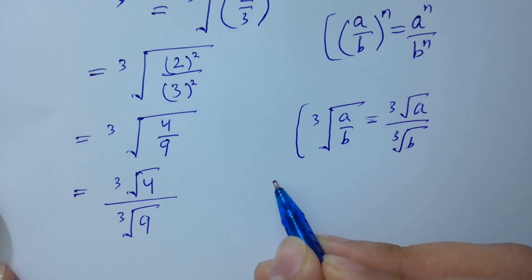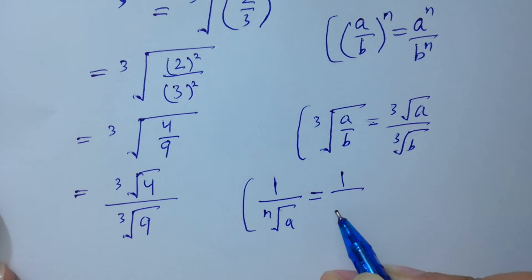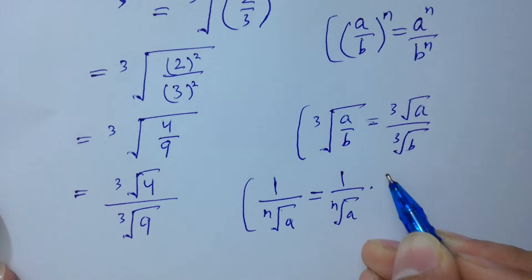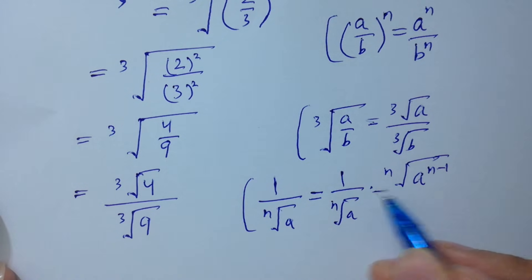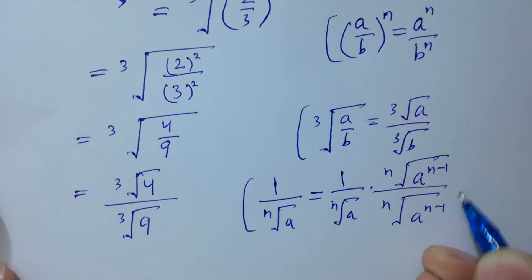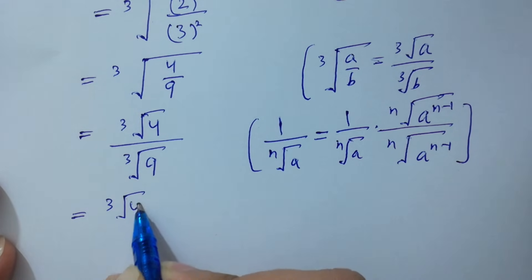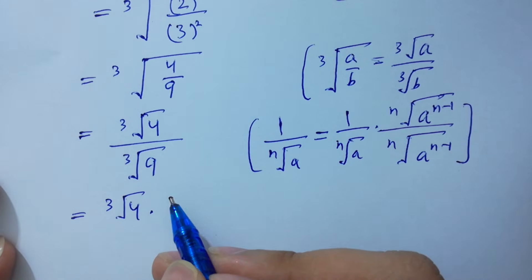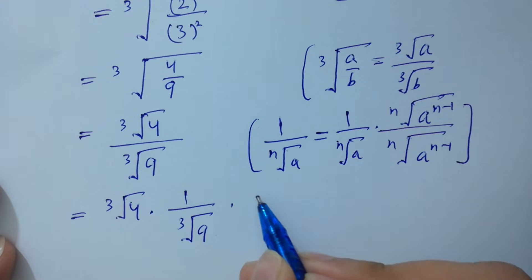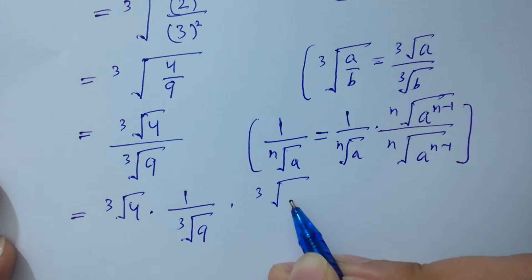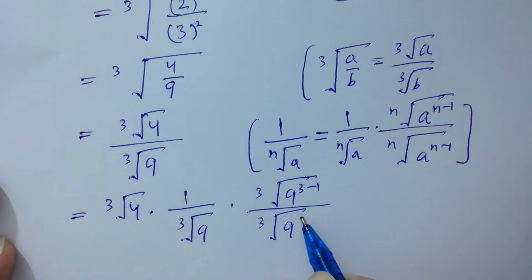Since 1 over n-th root of a equals n-th root of a to the power (n minus 1) over a, so 1 over cube root 9 will be cube root 9 to the power (n minus 1) over 9, where n minus 1 for cube root gives exponent 2.